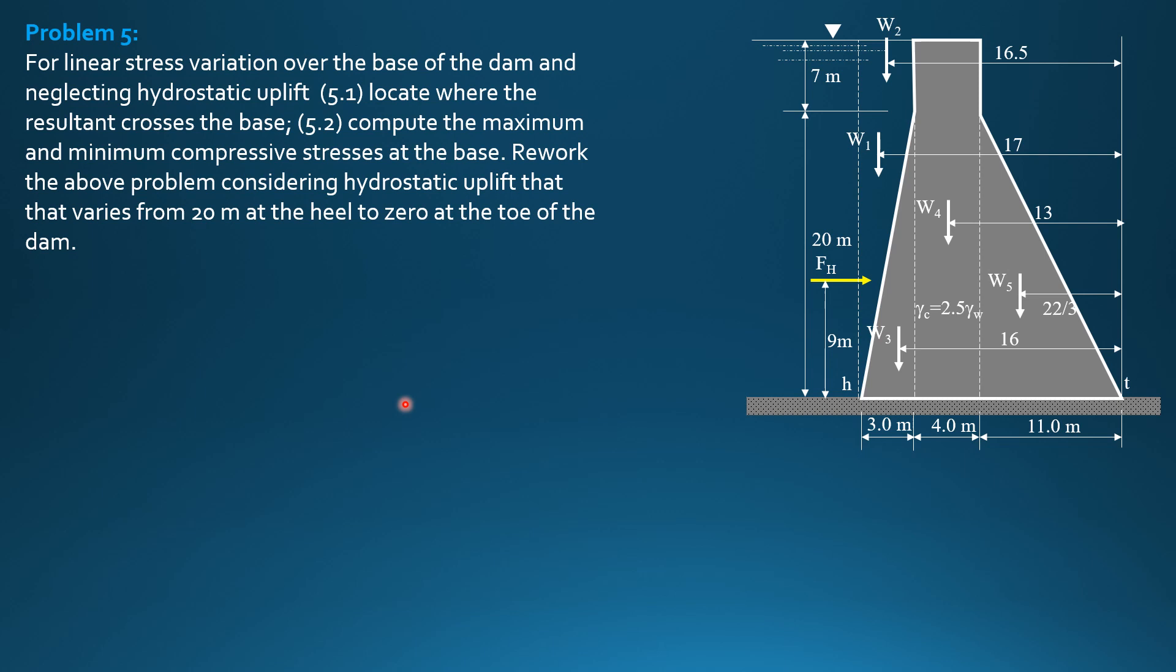So FH first, specific weight of water, 9.81 times H is 27 over 2, area 1 by 27. So FH is 3575.74 kilonewtons.